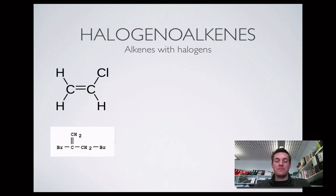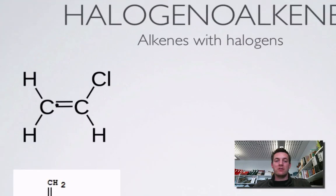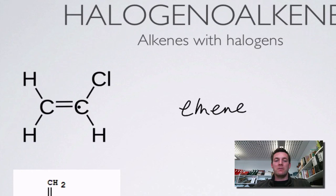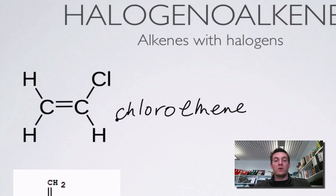Now these are halogenoalkenes — not alkanes but alkenes, so they have a double bond. Naming them shouldn't be frightening because we know the system for naming alkenes. This alkene has two carbons so it's called ethene. It has a chlorine attached to either the first or second carbon, but it doesn't matter which — flipping the molecule around gives the same structure. So this is called chloroethene. We don't need to specify where the chlorine is, and there's only one so we don't say 'di' or 'tri'.